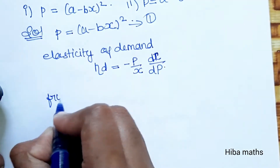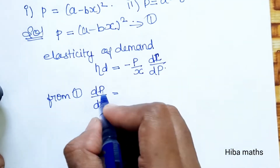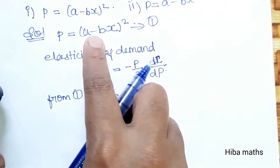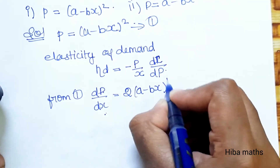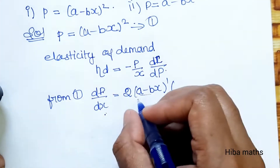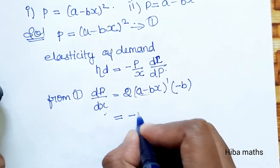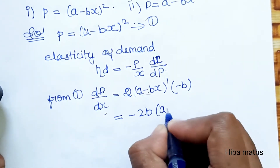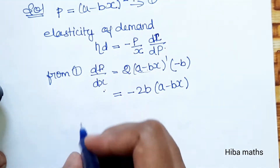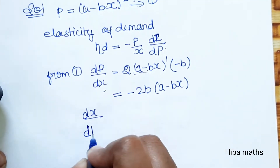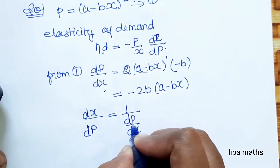From this, we first find dp by dx by differentiating p with respect to x. If the full term is x to the power n, then the derivative is n into x to the power n minus 1. Differentiating inside, the answer is minus 2b(a minus bx). But what we actually need is dx by dp, which we find as 1 divided by dp by dx.